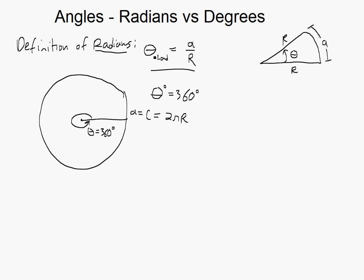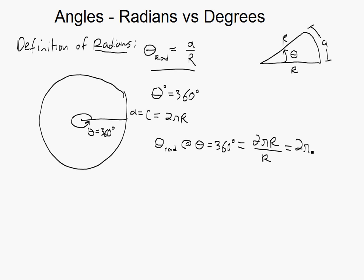So to get angle in radians — theta in radians — at theta equals 360 degrees, we have theta in radians equals arc length 2πR divided by R, so we get 2π radians.